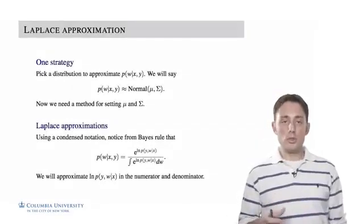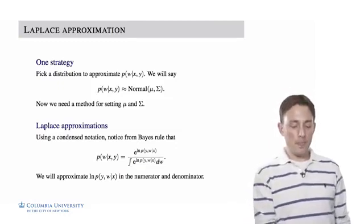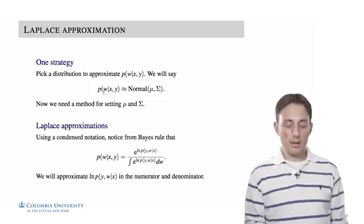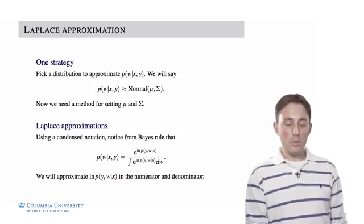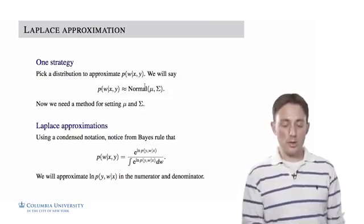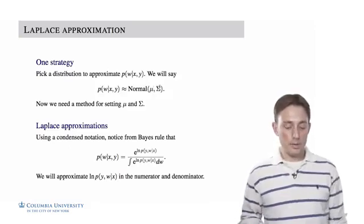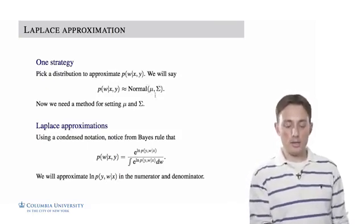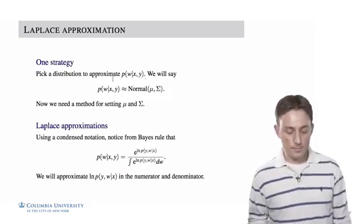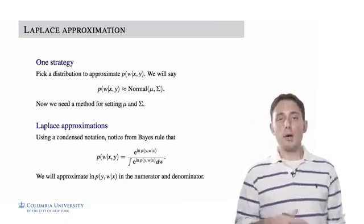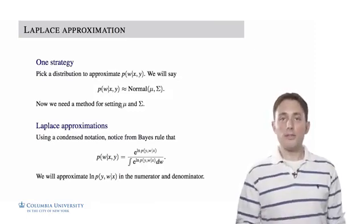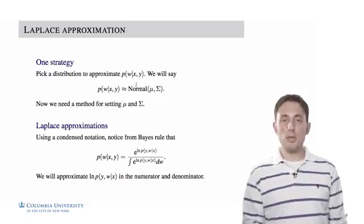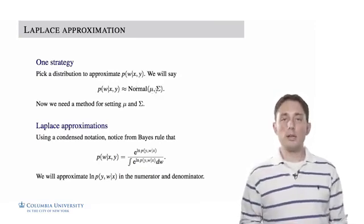The Laplace approximation is one approach to approximating the posterior distribution. What it does is take the posterior and, since we can't calculate it analytically, approximate it with a multivariate Gaussian distribution that has a mean and a covariance. The question is how we set those two parameters such that this distribution is approximately equal to the posterior. The Laplace approximation provides a specific way for finding these two parameters.